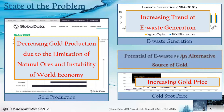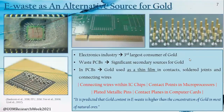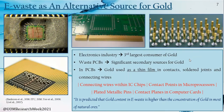The potential of e-waste as an alternative source of gold should be investigated. Also, most developing countries such as Sri Lanka have no economically viable gold ecosystem. Therefore, seeking out secondary resources will be a strategic move to face upcoming technological revolutions. Since PCBs use gold as a thin film in contacts, solder joints, and connecting wires, the gold content should be higher in PCB components such as connecting wires in IC chips, contact points in microprocessors, connector pins, and contact points in computer cards. It is predicted that gold-containing e-waste has higher gold concentration than most natural ore forms. Therefore, many researchers have developed gold extraction methods for e-waste.